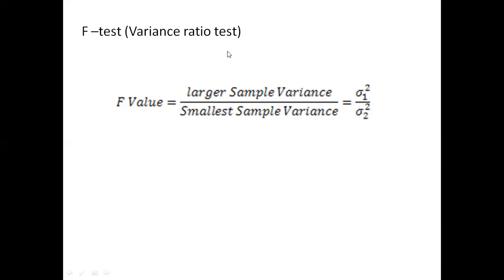F-test is used by comparing the ratio of two variances. When you want to compare the variances of two samples, you use the f-test. You should remember that the two samples should be independent. F-value can never be negative because it is a ratio, and the largest sample variance is placed in the numerator. Testing of overall significance of regression can also be done by the f-test.